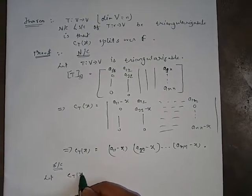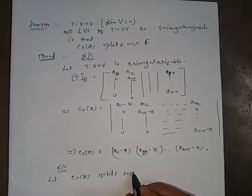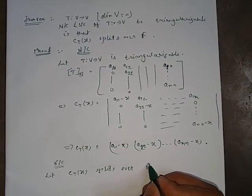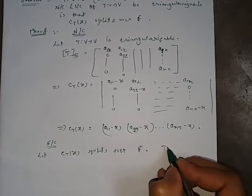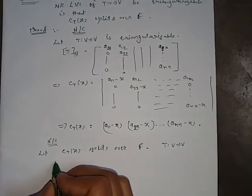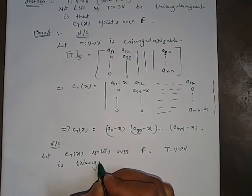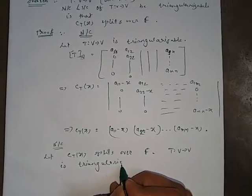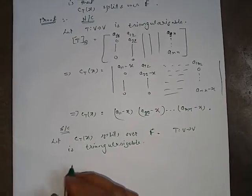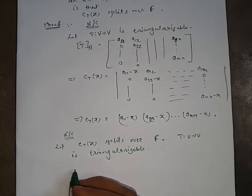Now for the sufficient condition: assume that C_T(x) splits over field F, that is the characteristic polynomial of T splits over F. Then we have to prove that T is triangularizable. For this condition we will use the induction theorem.